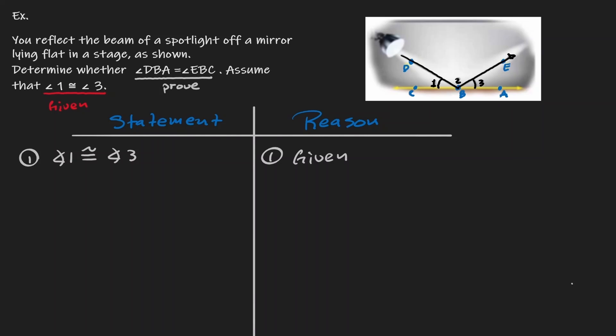Now let's start strategizing. If we want to prove that angle DBA is equal to angle EBC, let's start by defining those angles. Looking at the diagram, angle DBA is the addition of angle 2 and angle 3. So let's define that: angle DBA is equivalent to angle 2 plus angle 3. The reason for this statement is because you're allowed to add two angles to create a new angle — we refer to that as angle addition.